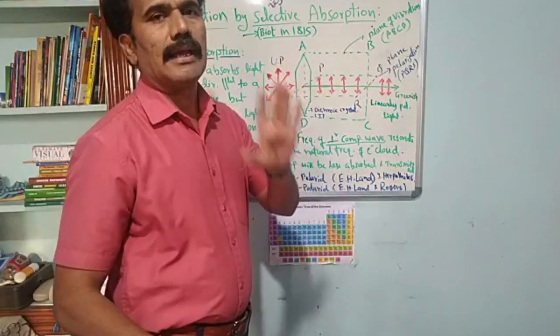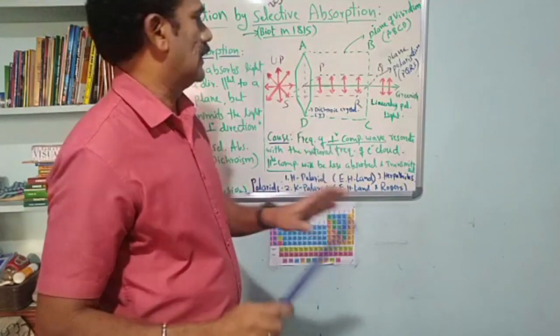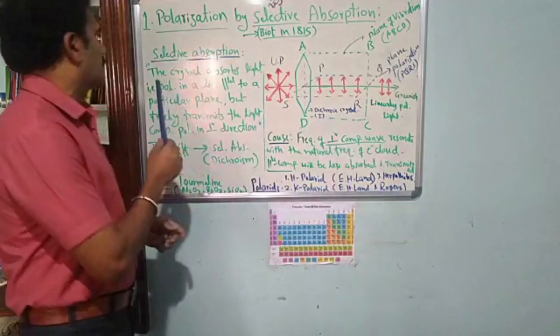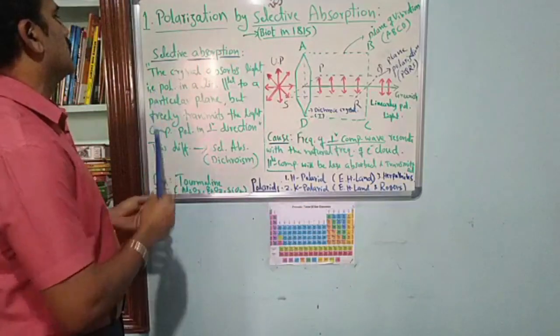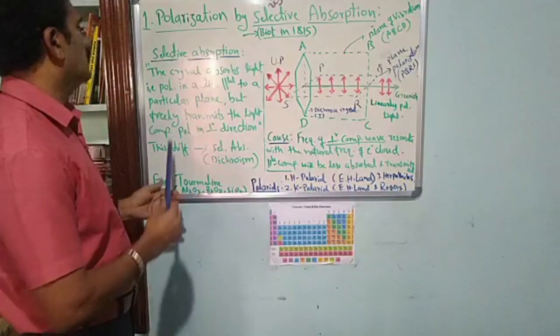What is selective absorption by the crystal? The crystal absorbs light that is polarized in a direction parallel to a particular plane, which is the PQRS plane, but freely transmits the